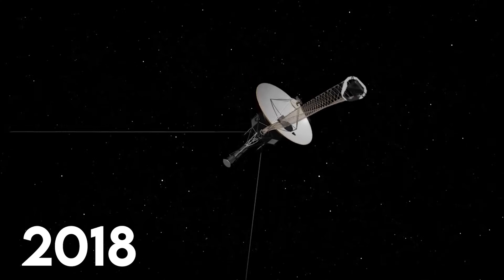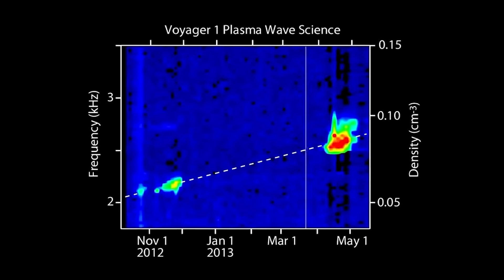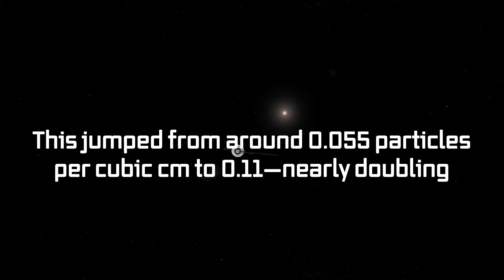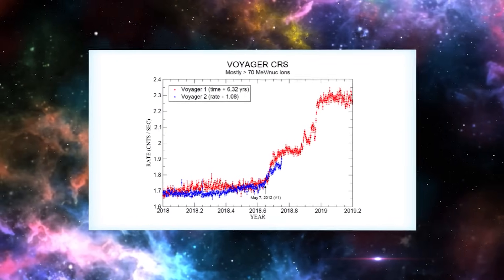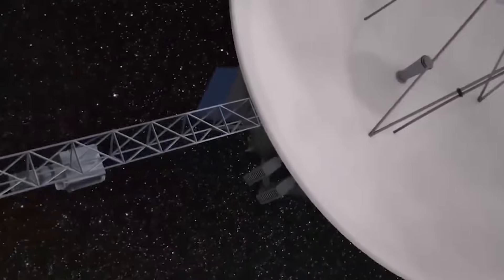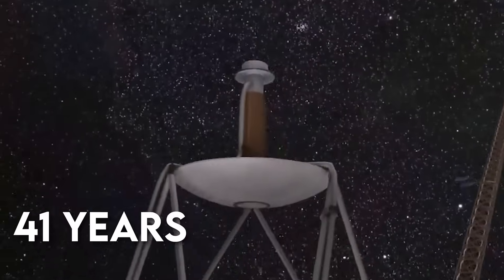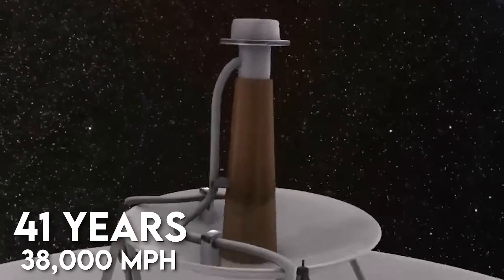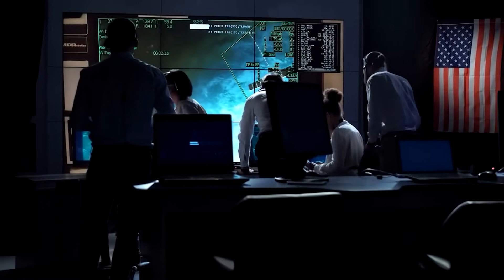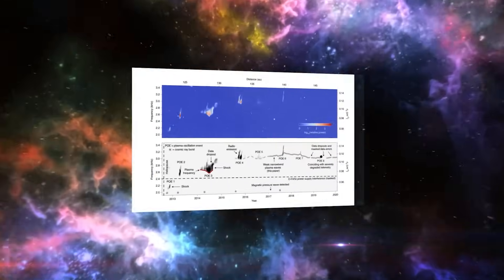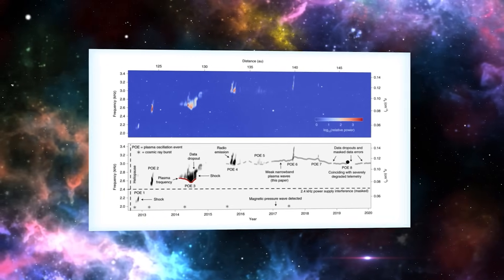In November 2018, Voyager 1 observed an impossible spike in the plasma density of interstellar space. This jumped from around 0.055 particles per cubic centimeter to 0.11, nearly doubling. The increase occurred at a distance of 119 astronomical units from the Sun. To reach this location, Voyager 1 traveled for over 41 years at 38,000 miles per hour. This dense plasma was the last thing scientists expected to find so far out. Models forecast gradually decreasing density, not a sudden surge.